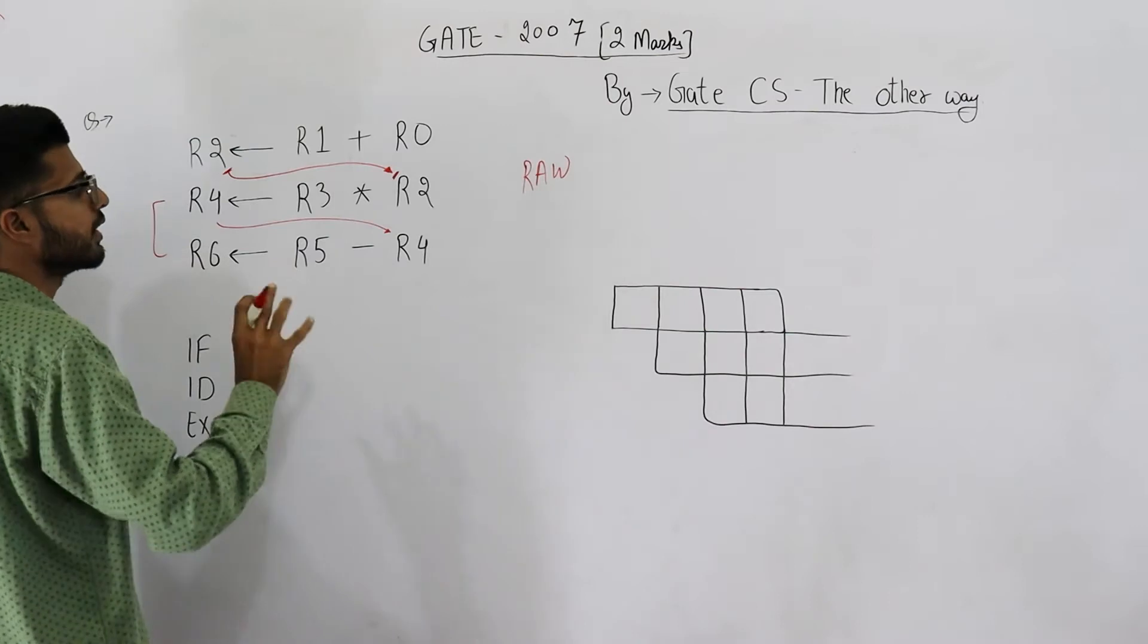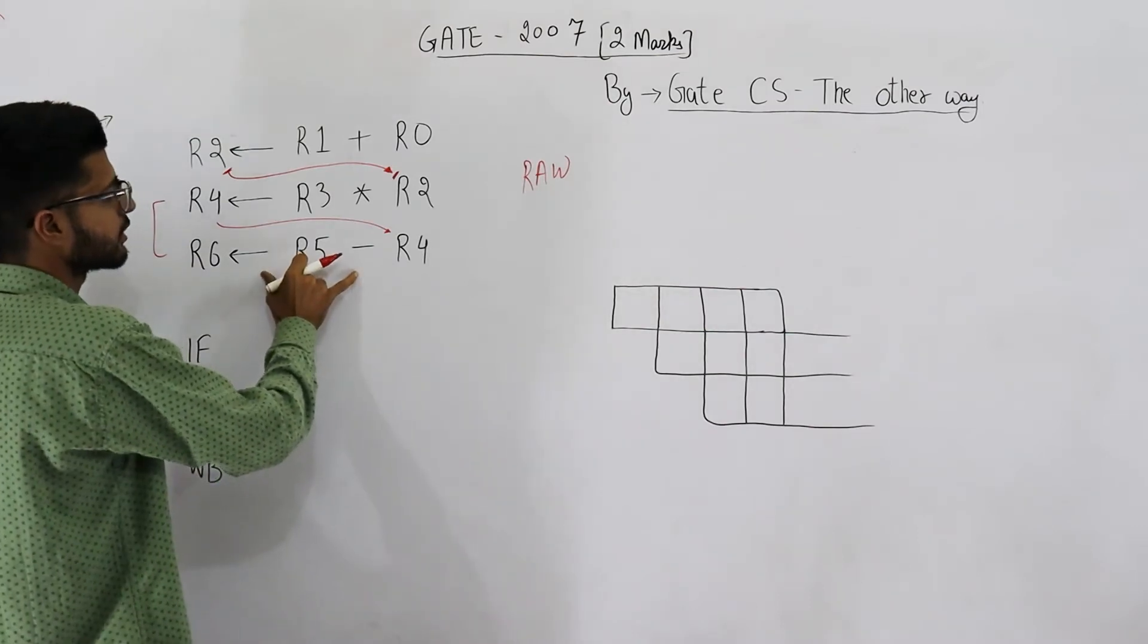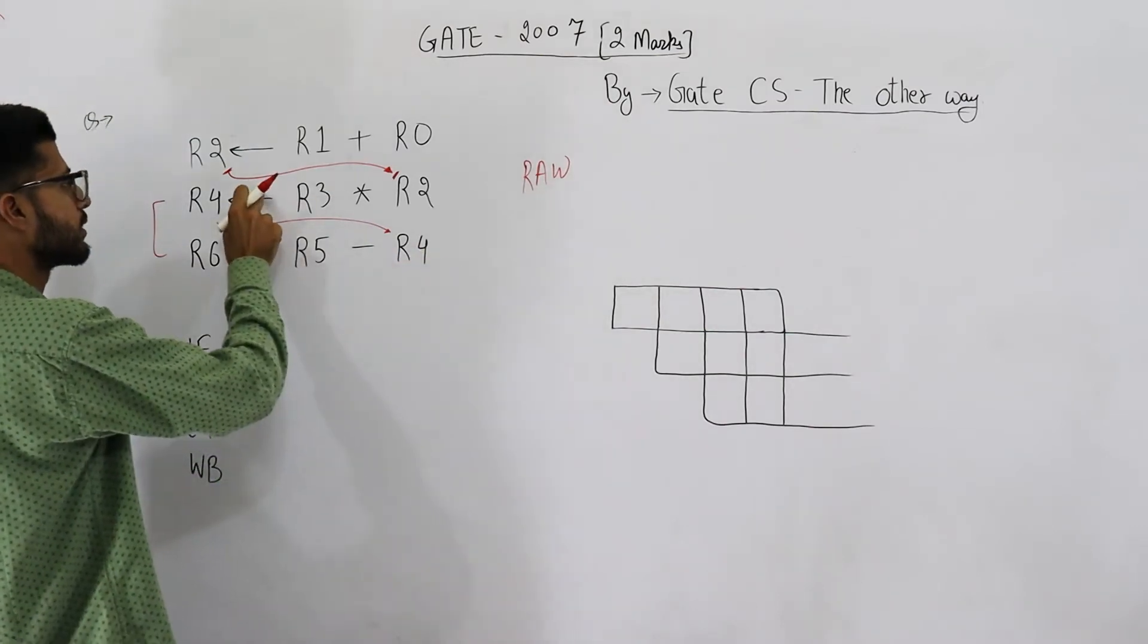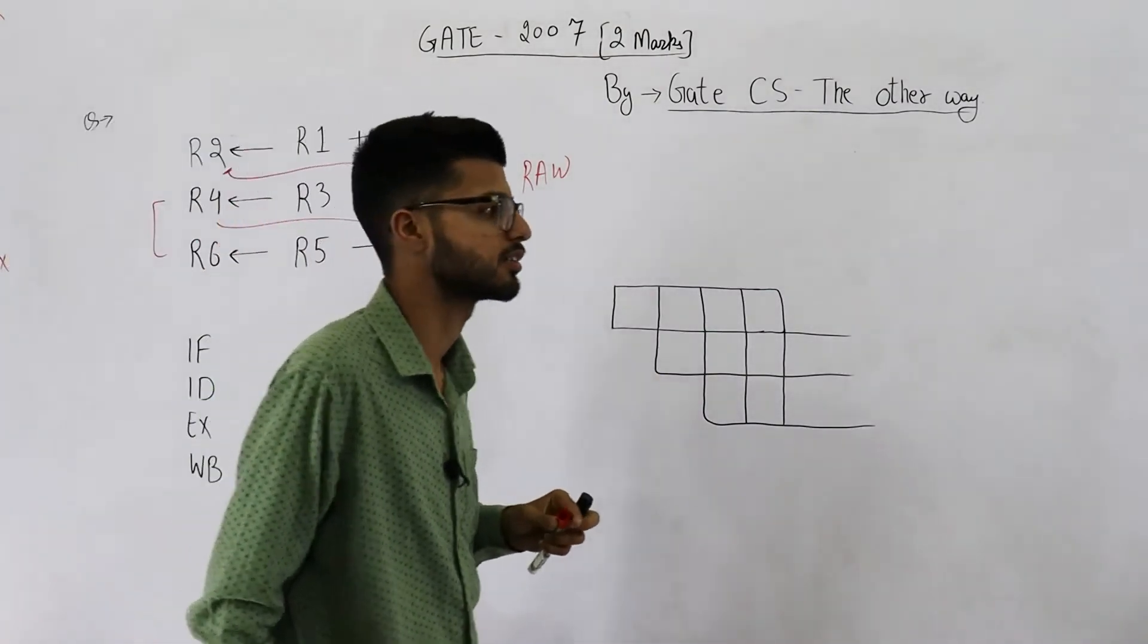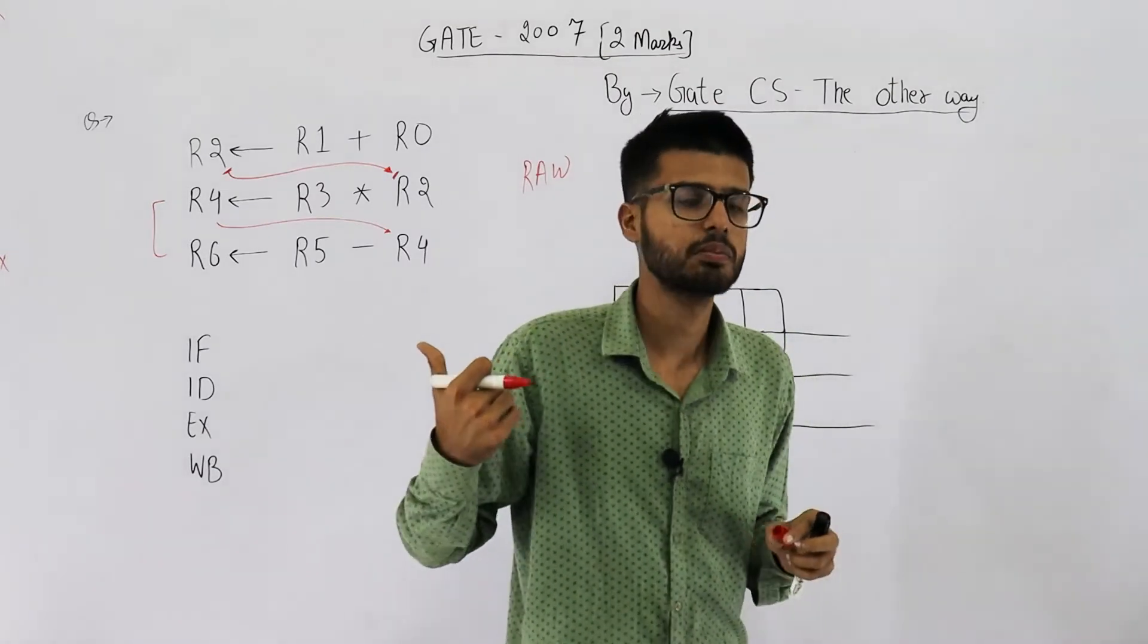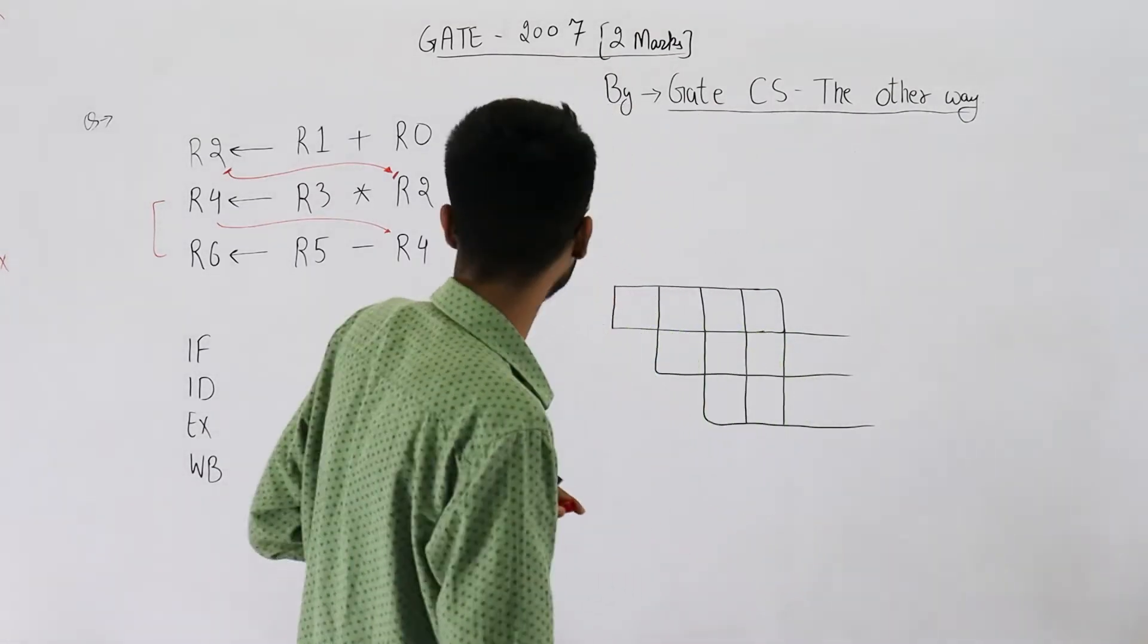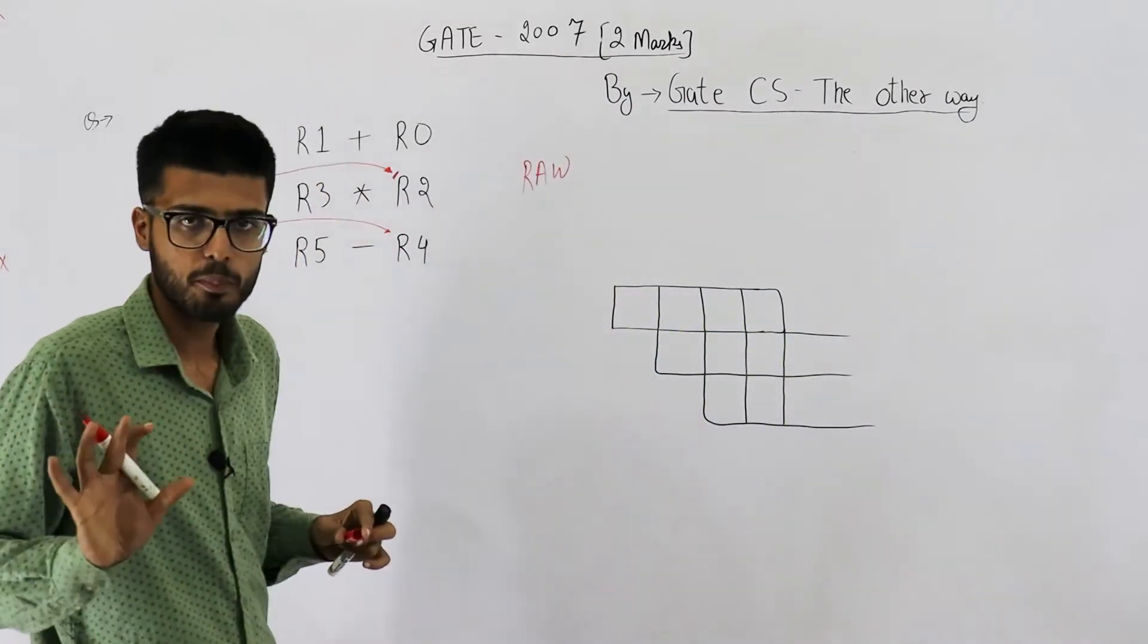Now if somehow this instruction reads the value before this instruction has written, there will be some problem. We don't want such problems, that's why we need to consider the dependencies and also implement some kind of solution. Operand forwarding is one of the proposed solutions.